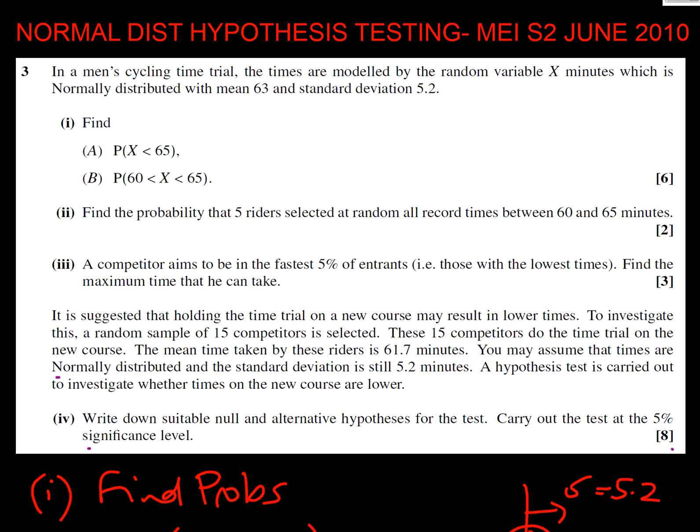Hello, demonstration of an MEI S2 question on normal distribution and hypothesis testing of a sample from a normal. I'll be using the June 2010 paper, question 3, as an example. As ever, the first thing we do is read the question. In a men's cycling time trial, the times are modeled by a random variable X, which is normally distributed with mean 63 and standard deviation 5.2.